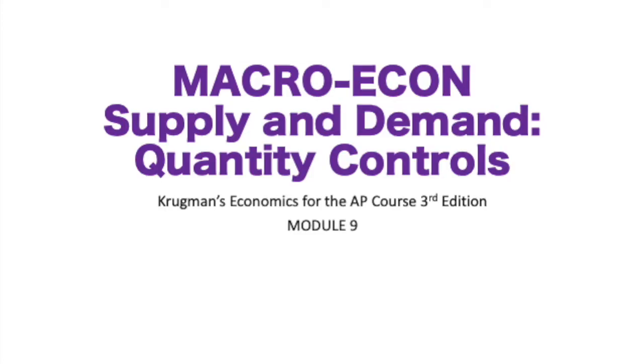All right, what's up, Econ gang? This is Mr. Jaeger. Today we're going to be talking about supply and demand, quantity controls. This is module 9 for Krugman's Economics for the AP course, 3rd edition. If you're taking an AP class, macroeconomics class, or an introductory economics class, this is the perfect video for you.